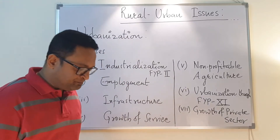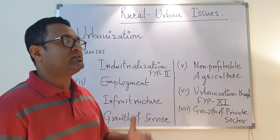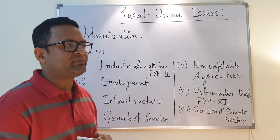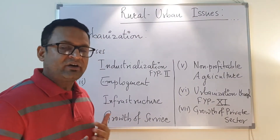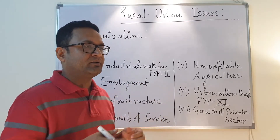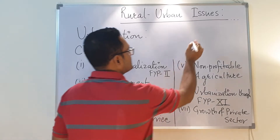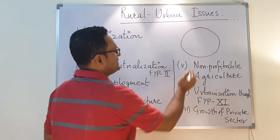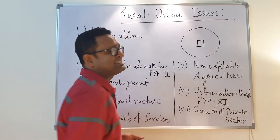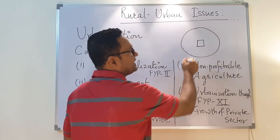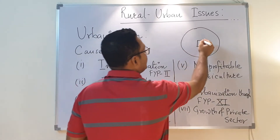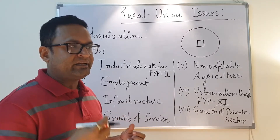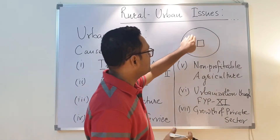Let us start with the concept of urbanization. The whole world was not always divided as rural or urban areas. In the primitive part of our existence, administration was confined to the center of kingdoms. The central, most fortified part was the city, where there was the palace, administration, and all official works. The surrounding areas were the service providers — agricultural produce, small mining, crafts, and so on.